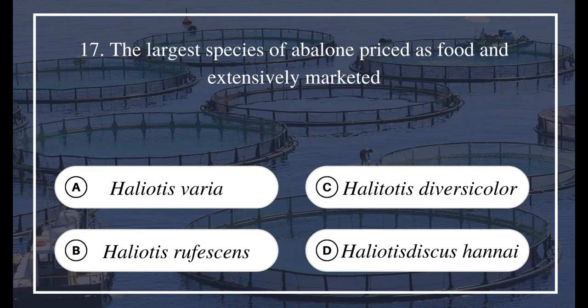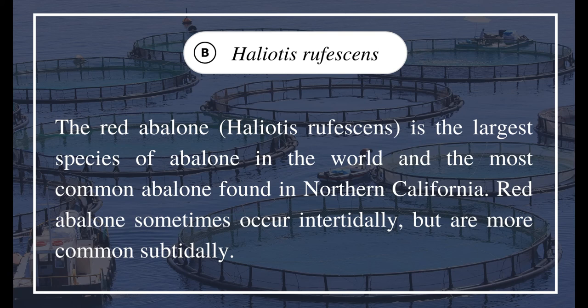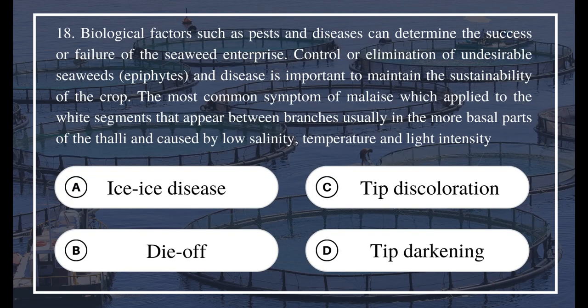Question 17: The largest species of abalone prized as food and extensively marketed — a) Haliotis varia, b) Haliotis rufescens, c) Haliotis diversicolor, d) Haliotis discus hannai. The answer is B, Haliotis rufescens. The red abalone Haliotis rufescens is the largest species of abalone in the world and the most common abalone found in northern California. Red abalone sometimes occur intertidally but are more common subtidally.